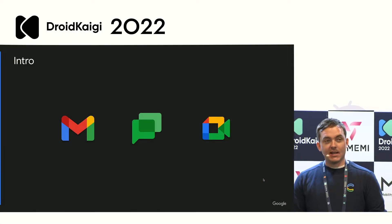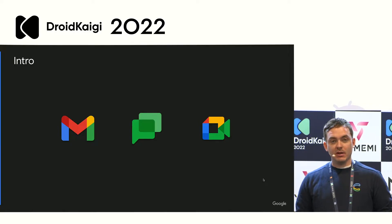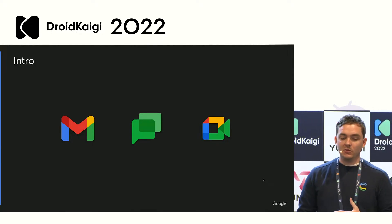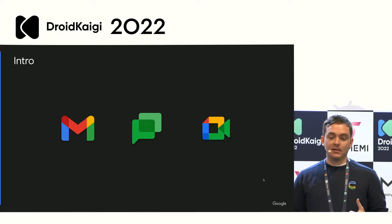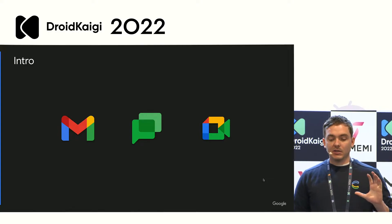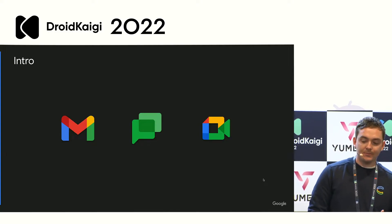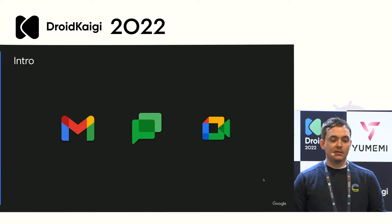Hello everyone. My name is Zach. I'm an engineer at Google. I work on Gmail, Chat, and Meet. Today I'm going to do an introductory talk on Dagger and Hilt and why we strongly recommend investing in it. I'll also give some examples on how Hilt can simplify your existing Dagger integration and keep you focused on just writing great applications.